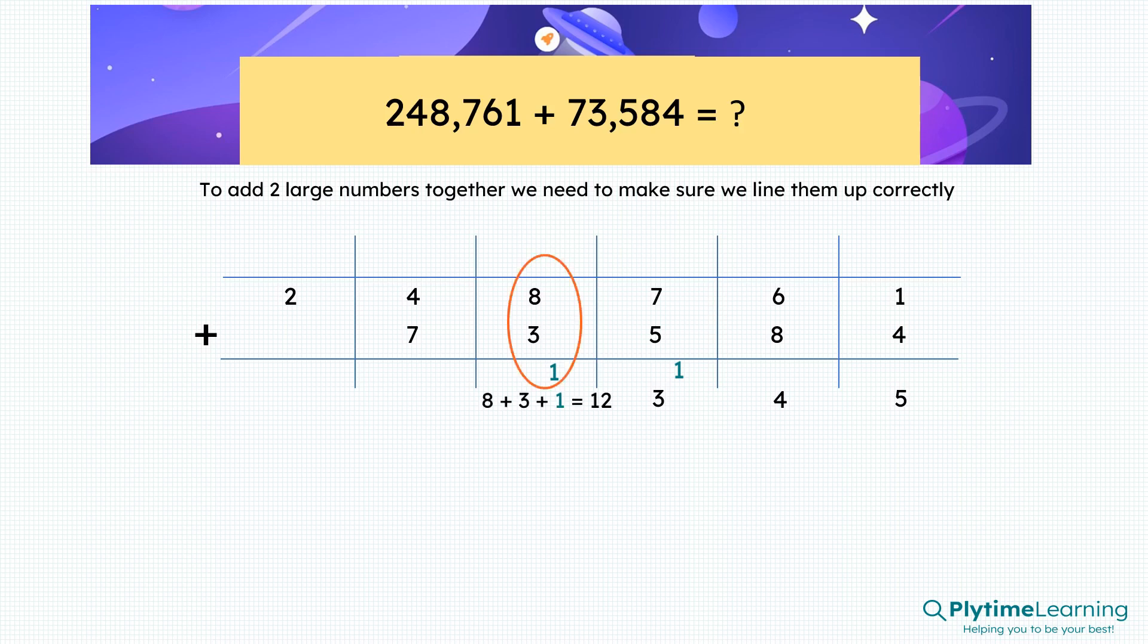Then we have eight plus three plus the one we've carried forward is a total of twelve. We write the two and we carry the one forward into the next column.